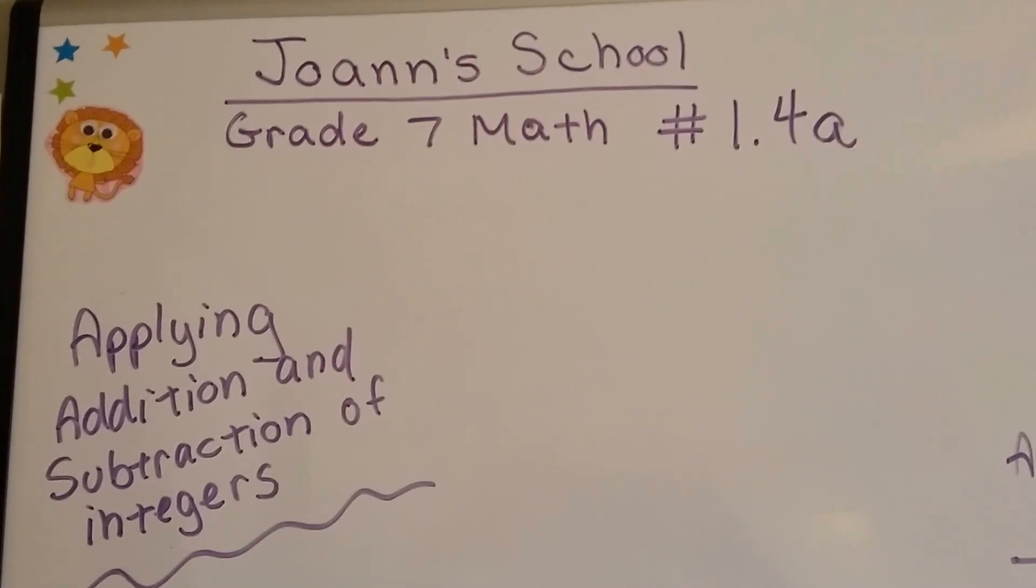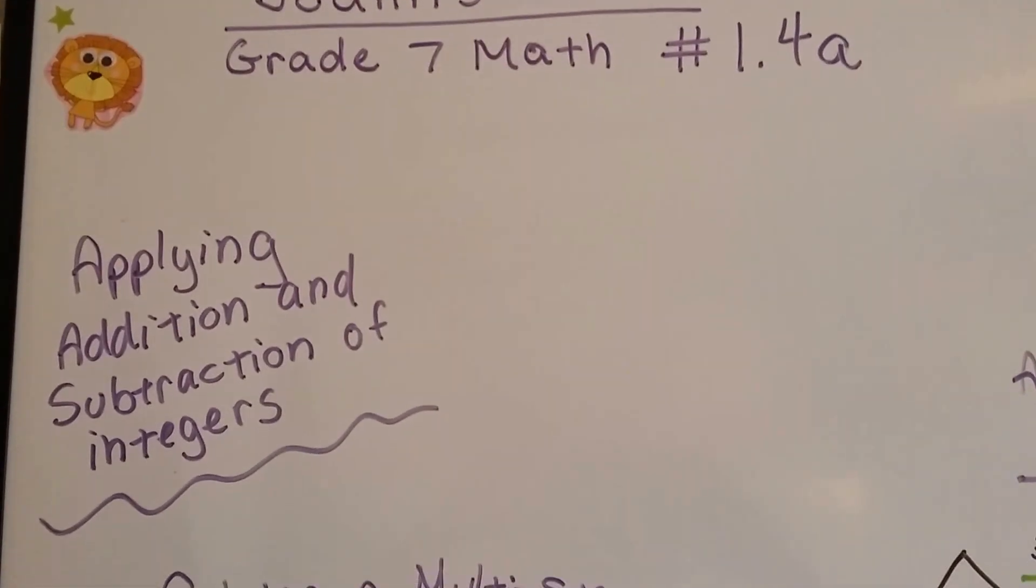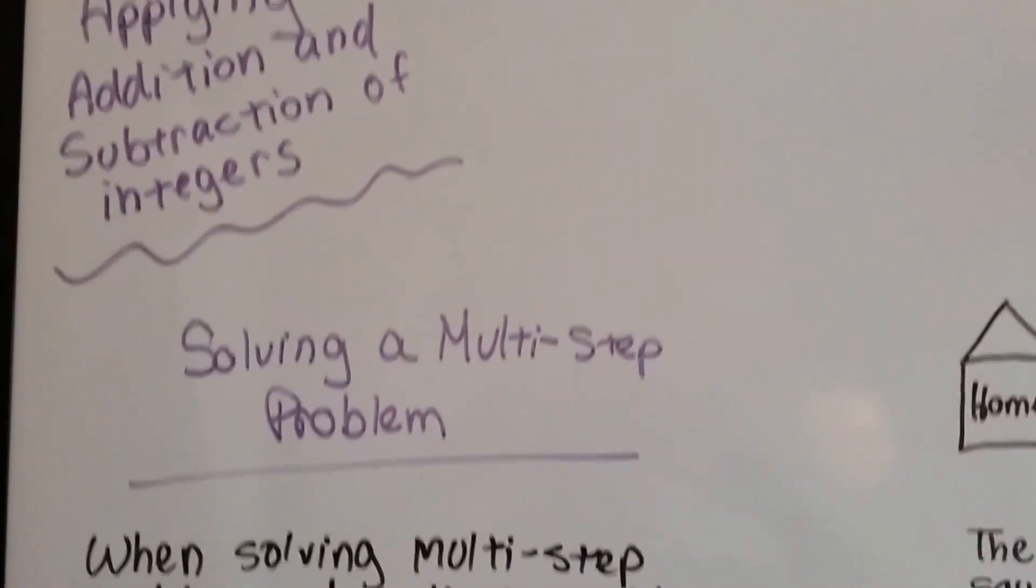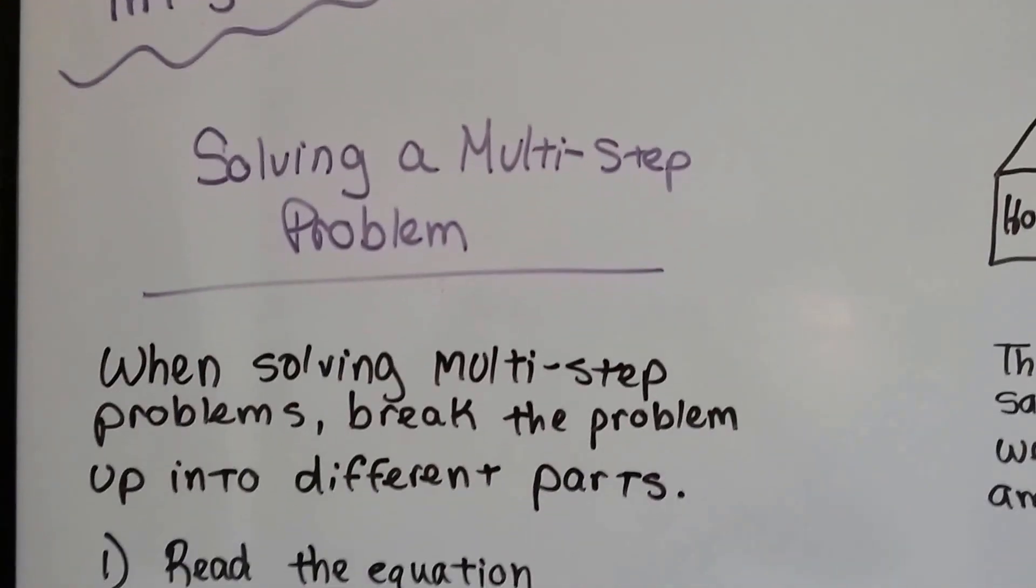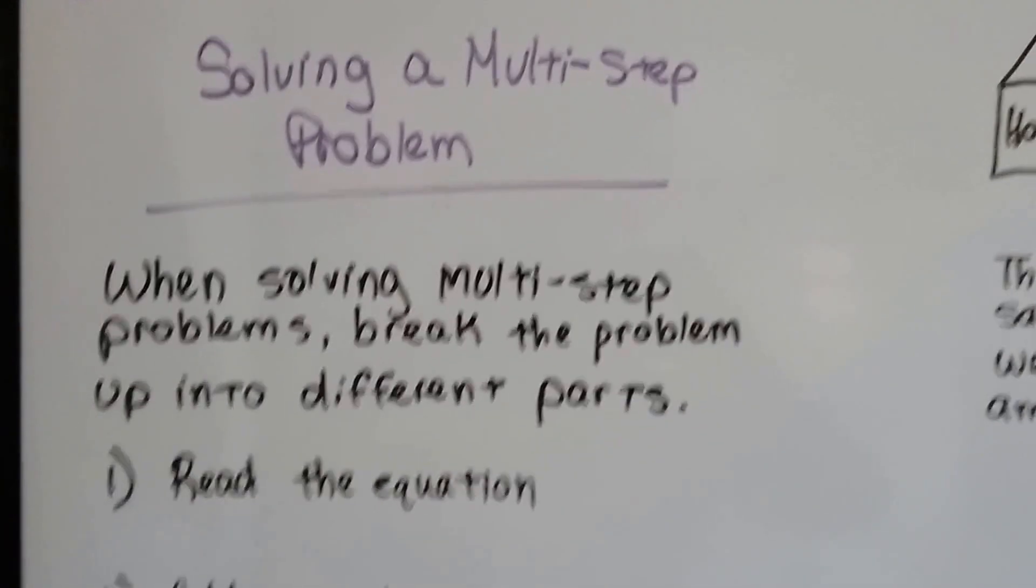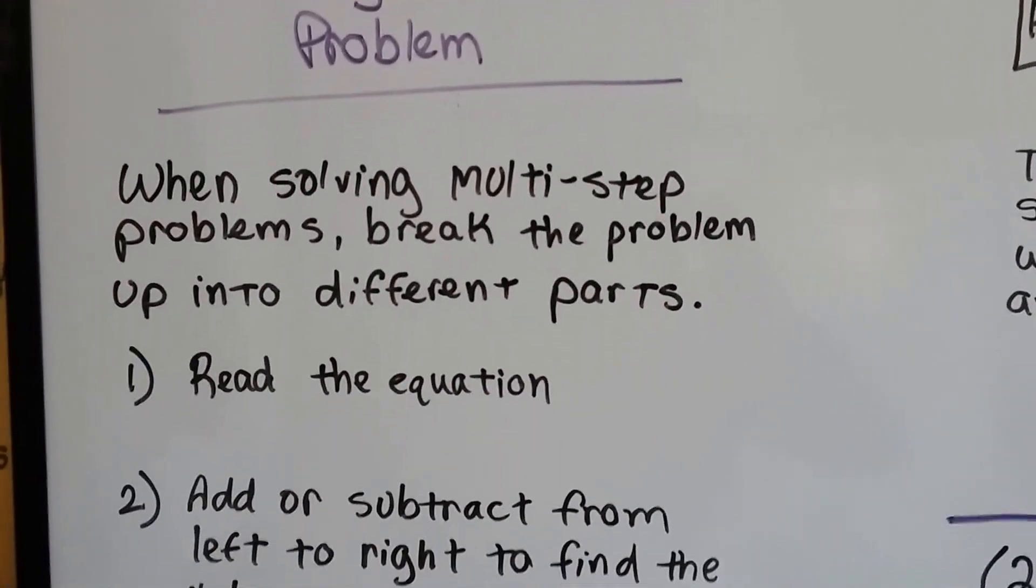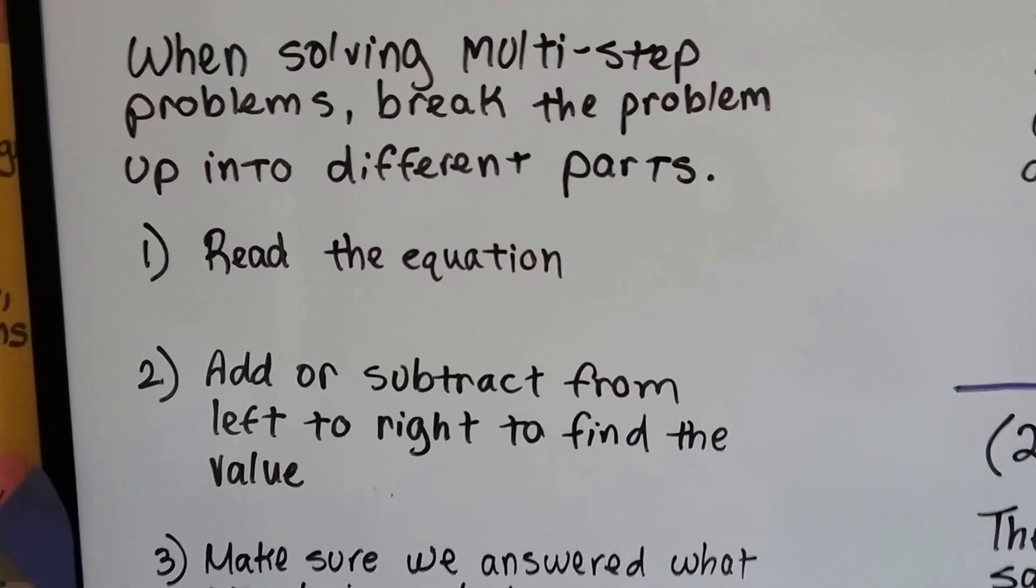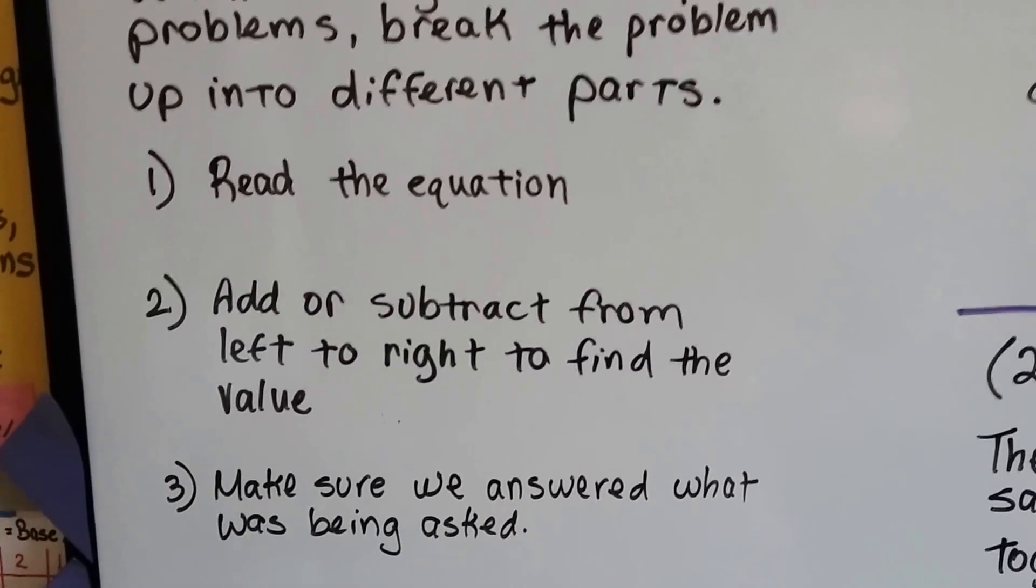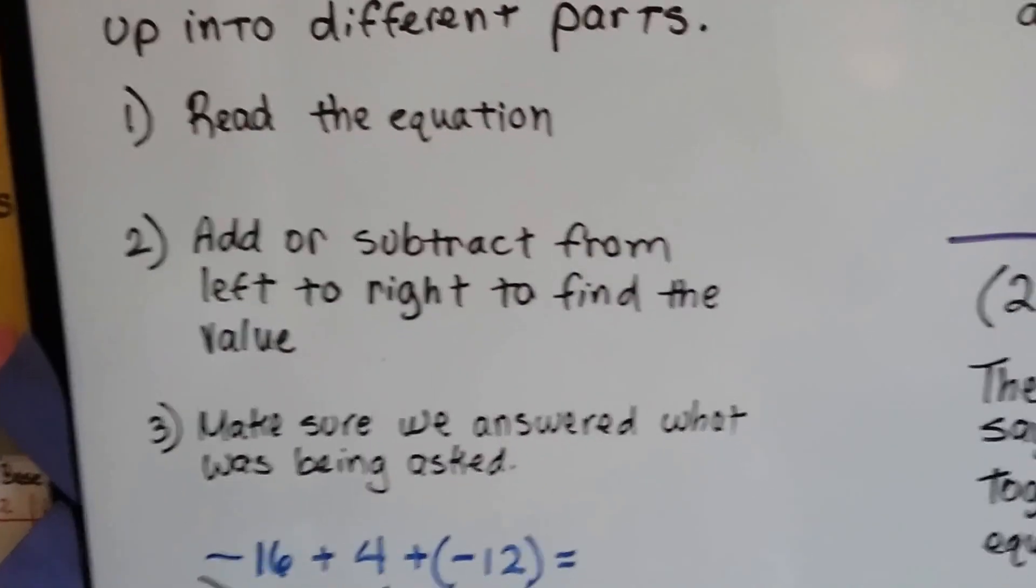Grade 7 math number 1.4a, Applying Addition and Subtraction of Integers. For solving a multi-step problem, we want to break the problem up into different parts. We want to read the equation, add or subtract from left to right to find the value, and make sure we answered what was being asked.